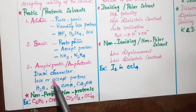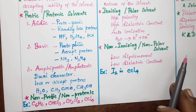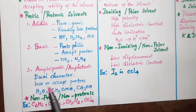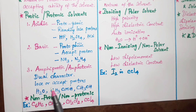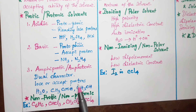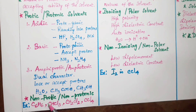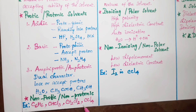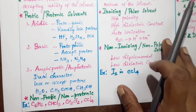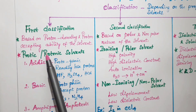Amphiprotic solvents have a dual nature — they can both lose and accept protons. Examples include water, acetic acid, and methanol. Non-protic (non-protonic) solvents include benzene, chloroform, methylene chloride, and carbon tetrachloride.